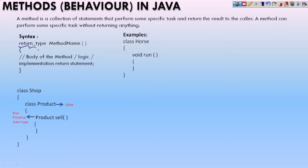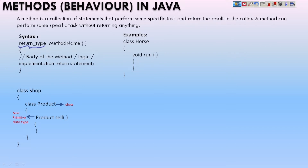First you have something called a return type. What is this return type? Return type is something which this method is going to return. For example, if you are going to add two numbers — two plus two equals four — the return data I am getting is an integer. So first you have to write what type of data the return type is going to return.